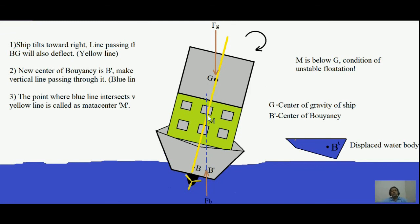So what we have learned is that a floating body will remain in stable floating condition only if M is above G. The metacenter of the system must always be above G; only then will the floating body stably float. Otherwise it will overturn and sink inside the liquid. Hope this lecture helped you understand what metacenter is and what the stability criterion of a floating body is. Thank you.